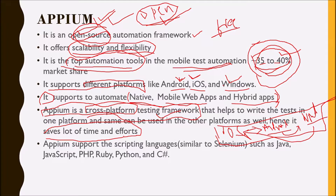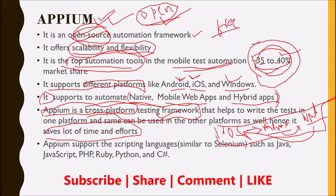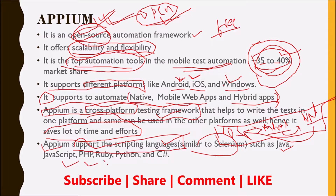That cross-platform capability saves a lot of time and effort in bringing automation, and that is one of the core strengths of the APM automation tool. Another important aspect of APM is it supports various scripting languages. APM doesn't have its own scripting language, but it supports various other scripting languages similar to Selenium, such as Java, JavaScript, PHP, Ruby, Python, and C Sharp. Most popular programming languages are supported by APM.